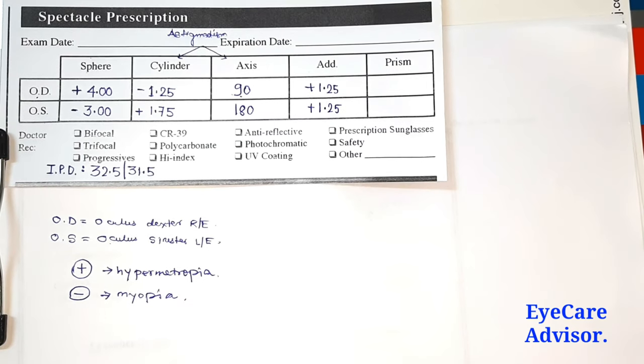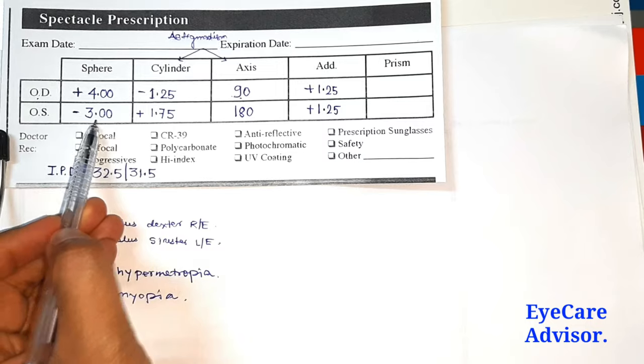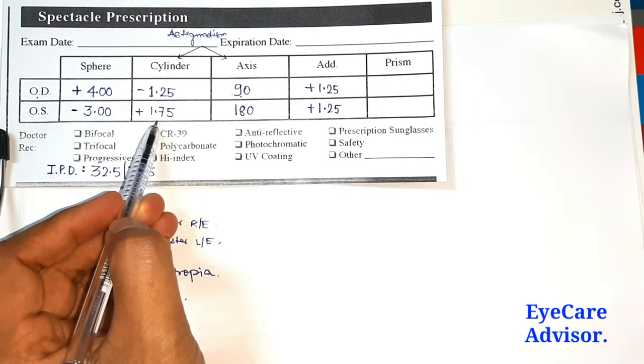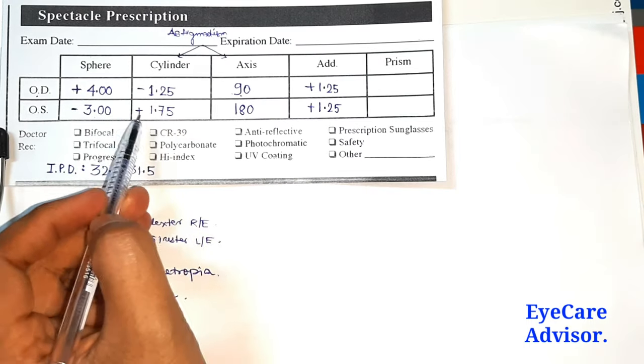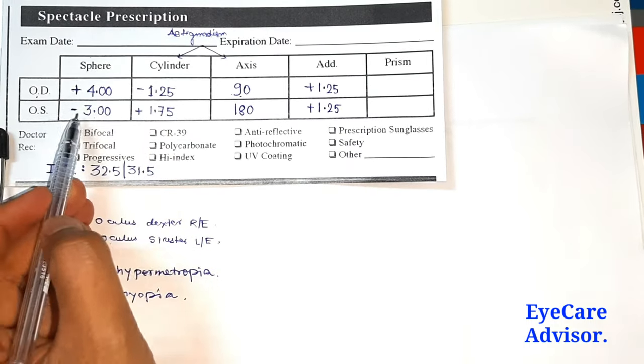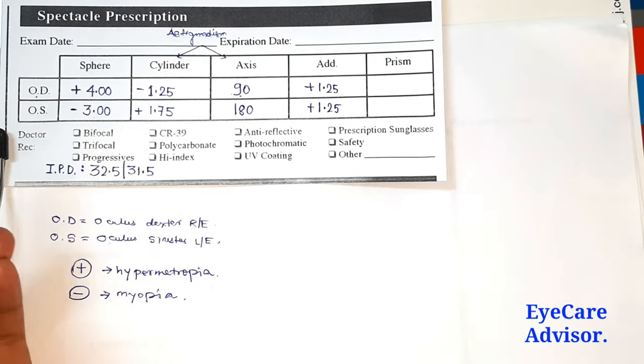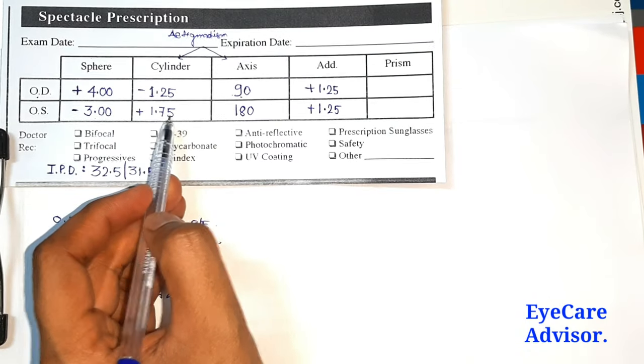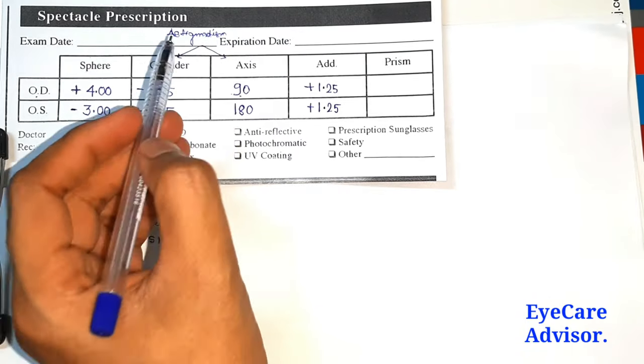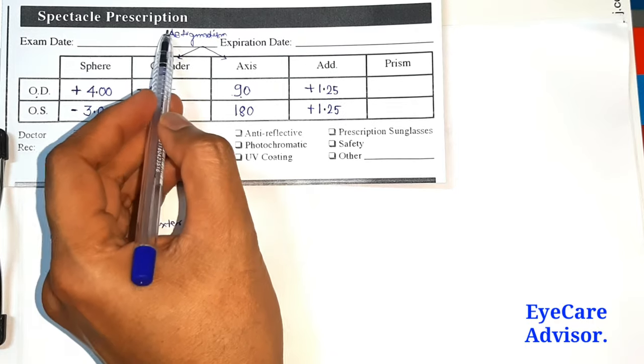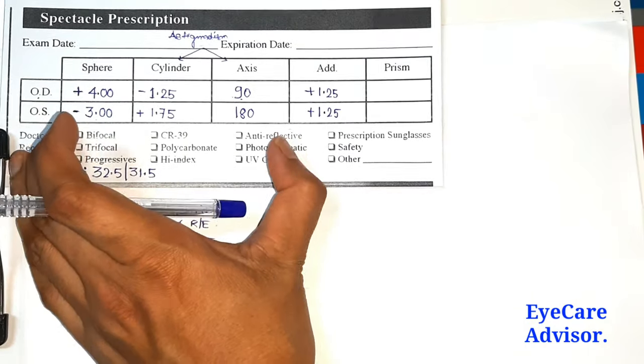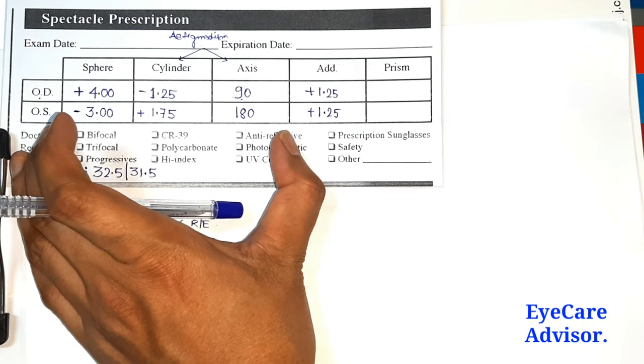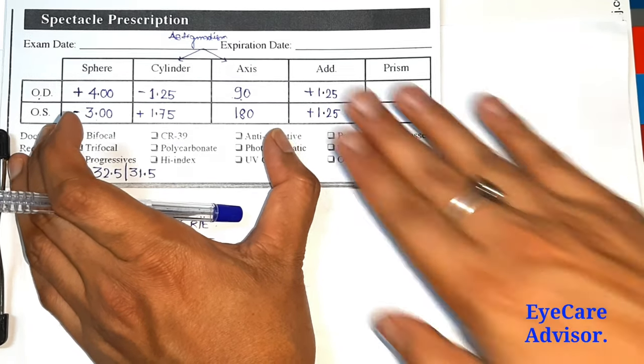As you can see here, the prescription for the left eye is minus 3 with plus 1.75 cylindrical power. The cylinder can be plus or minus, and the sphere also can be plus or minus. Whenever there is cylindrical power, it will always come with an axis, and these two parts will come when you're having astigmatism. This is the normal prescription everyone will have when checking for glasses.